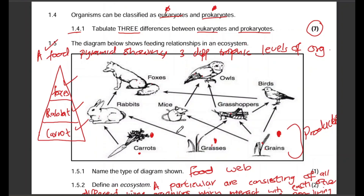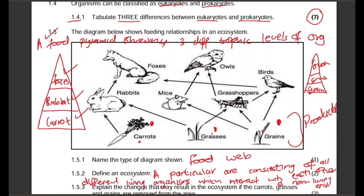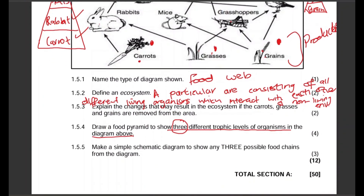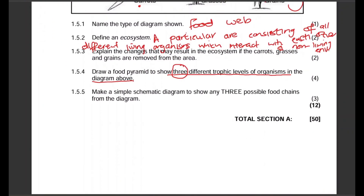Even if you choose grains instead of carrots, with grasshopper as primary consumer and owls or birds as secondary consumer, that is fine. You don't have to choose the first option as long as your pyramid shows three organisms at three trophic levels. Next: make a simple schematic diagram to show any three possible food chains from the diagram — that is also straightforward.